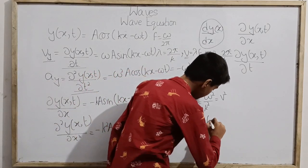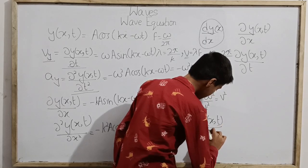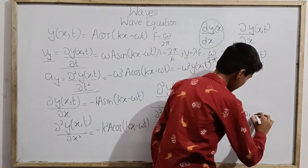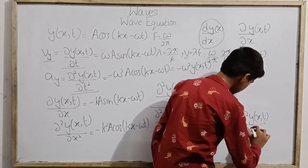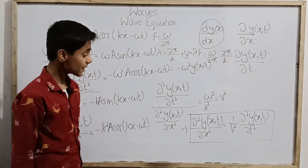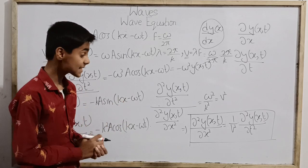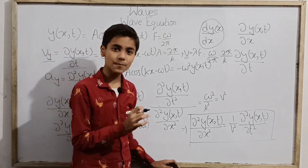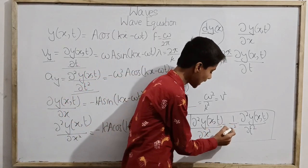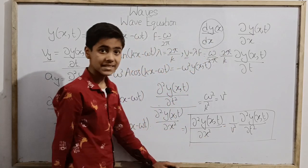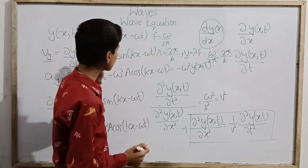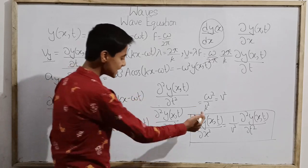So we get: ∂²y/∂x² = (1/v²) × ∂²y/∂t². This equation is what we call the wave equation. As I said at the start, we will not present the solution here because it is very complicated — that will be studied at BSc and MSc level. Presently, according to the Class 11, JEE, and NEET syllabus, this derivation of the wave equation is what we need.